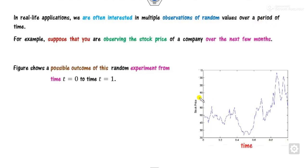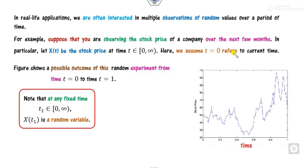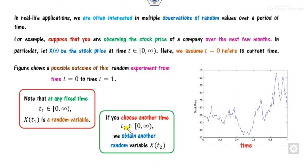In our day-to-day life there are many applications which vary over time. A beautiful example is the stock market — the stock price changes frequently with respect to the passage of time. If I observe from t=0 to t=1, the stock price sometimes increases and sometimes decreases. If I consider X(t) as my stock price from 0 to infinity, and fix a particular time t₁, the value at that time is called a random variable or random process.